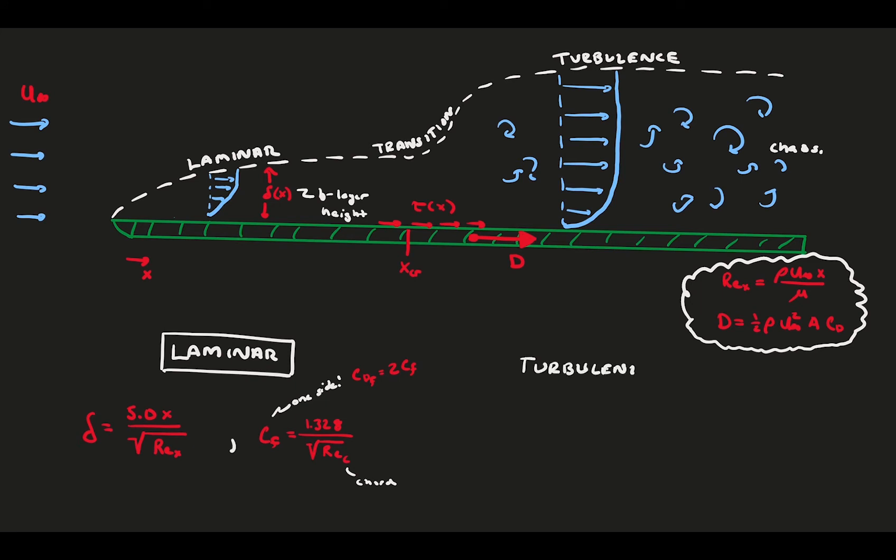And for a turbulent boundary layer, the height and skin friction both grow as 1 over the Reynolds number to the 1 fifth power. And again, this skin friction is only for one side of the body.